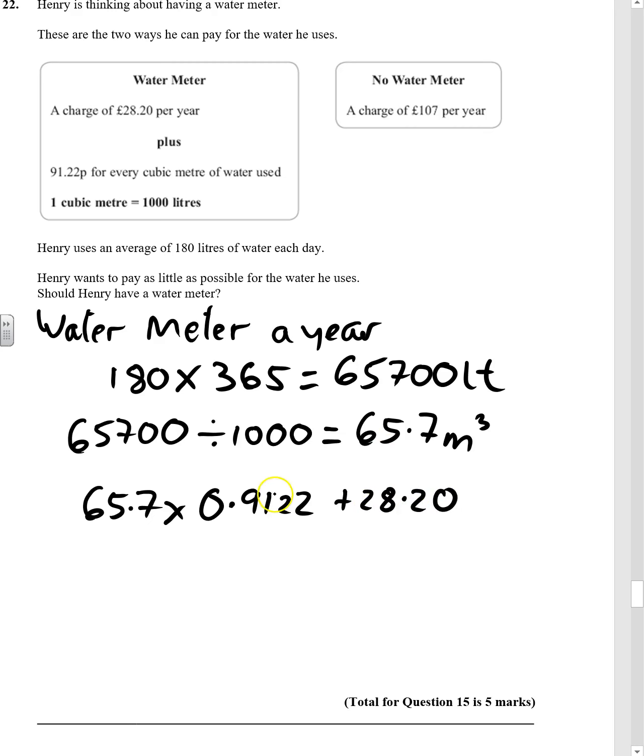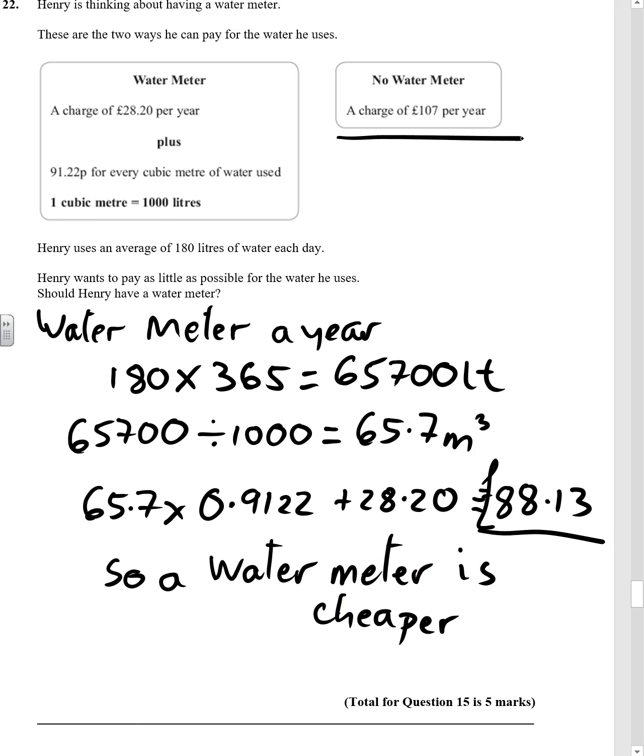We're working in the right units. This is all in pounds. Tap that into our calculator. It gives us £88.30. So a water meter will be cheaper. Because we've clearly shown a water meter is £88.13 a year, as opposed to a standard charge of £107 per year.